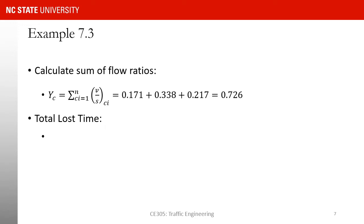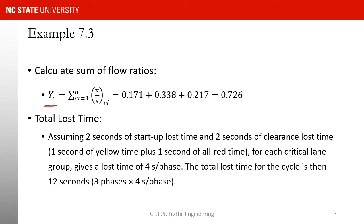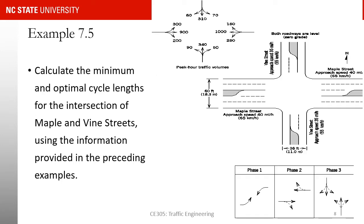The summation of critical flow ratios, y_c, is 0.171 plus 0.338 plus 0.217, equaling 0.726. Although the question did not ask about loss time, assuming two seconds of startup loss and two seconds of clearance loss per phase gives four seconds per phase. With three phases, the total loss time L is 12 seconds. Now that we have the phase sequence, the summation of flow rate ratios, and the loss time, we are ready to find the minimum and optimal cycle lengths.